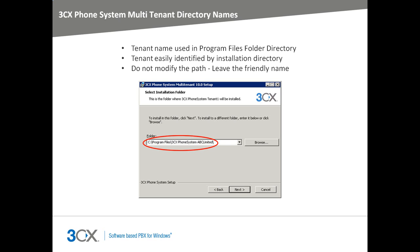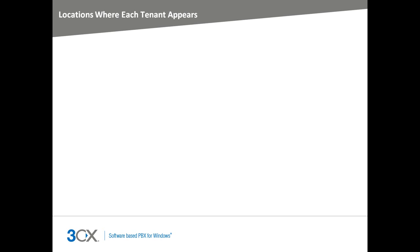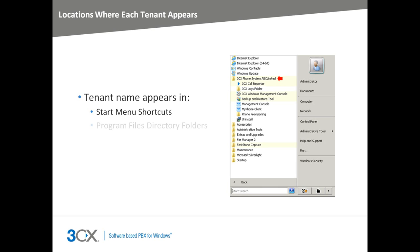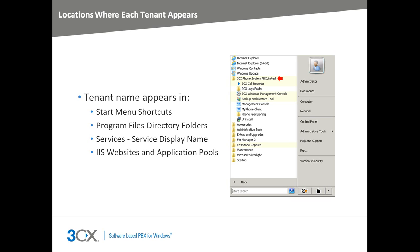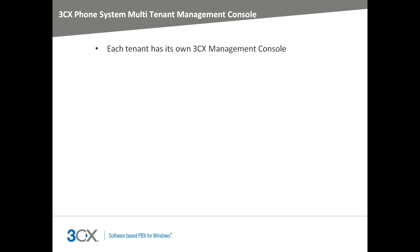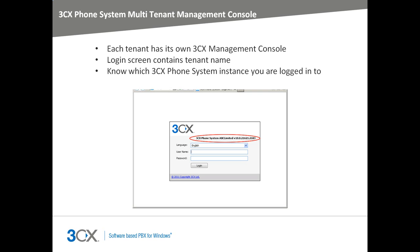It is not recommended that you modify the path, but rather leave the friendly name included in the Program Files directory. The installation will proceed and after setup is complete, the 3CX Wizard will be launched to create an instance of 3CX Phone System for Company ABC Limited. All installed tenants can be found in the Start menu shortcuts, Program Files directory folders, Services and in the IIS websites and application pools.